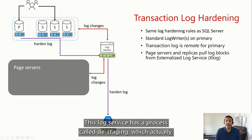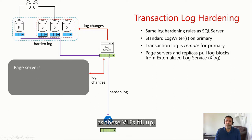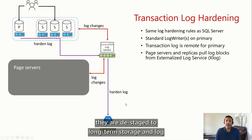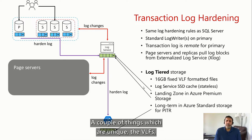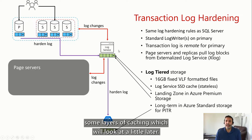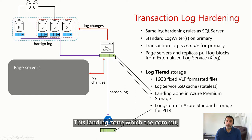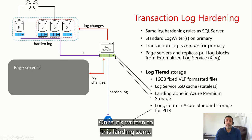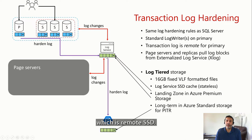The log service has a process called destaging, which, as these VLFs fill up, destages them to long-term storage. Log is hardened to long-term storage as well. The VLFs or virtual log files are a fixed size on Hyperscale — they're 16 gigs in chunk. The log service also has some layers of caching. There is a landing zone — all a commit has to do is write to this landing zone, and once it's written there, the log is hardened. This landing zone is Azure Premium Storage, which is a remote SSD. And last but not the least, there's long-term retention for your point-in-time restore — by default seven days, and soon we'll be lifting that to 35 days with configurable restore time.